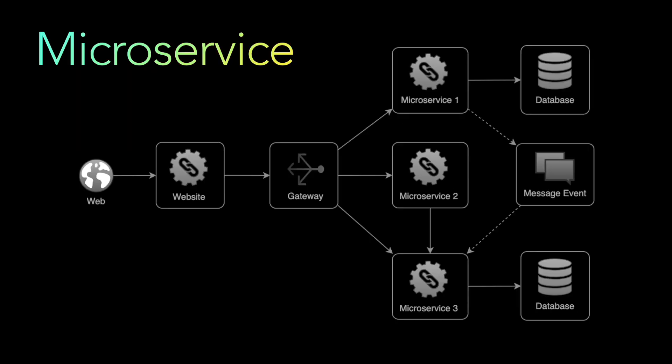From service-oriented architecture, the next evolution was microservices architecture. Microservices architecture evolved from service-oriented architecture, but it granularized applications into small autonomous services, each mostly responsible for one single task. All these microservices interact with each other to unify the complete business application.